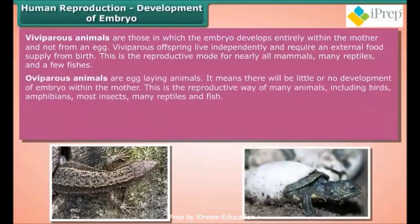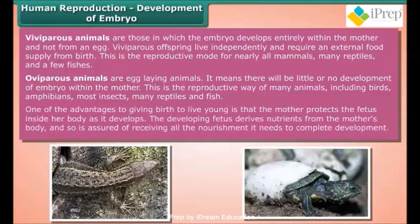Oviparous animals are egg-laying animals, meaning there is little or no development of the embryo within the mother. This is the reproductive method of many animals, including birds, amphibians, most insects, many reptiles, and fish. One advantage of giving birth to live young is that the mother protects the fetus inside her body as it develops.